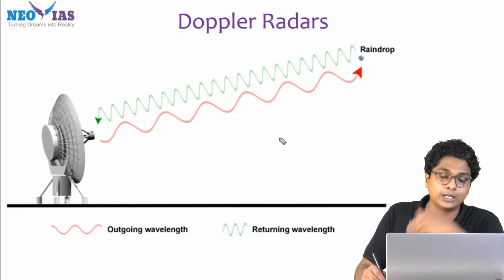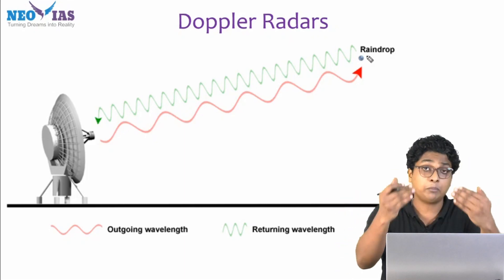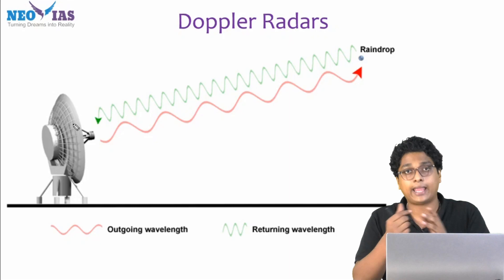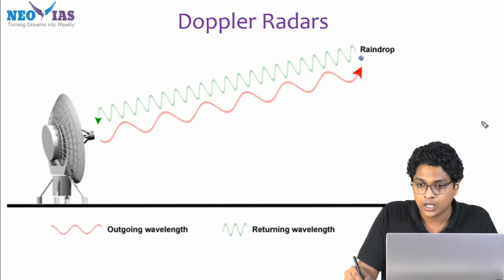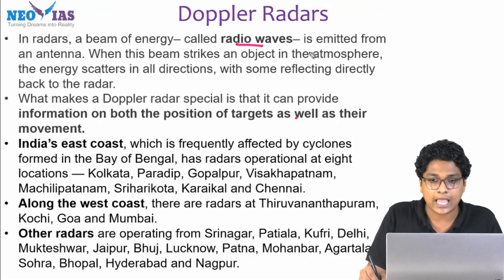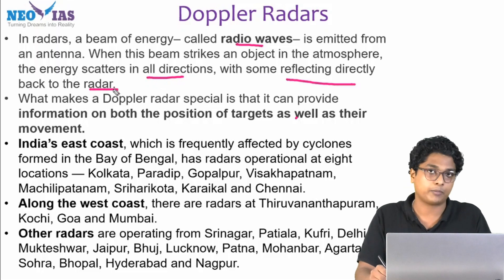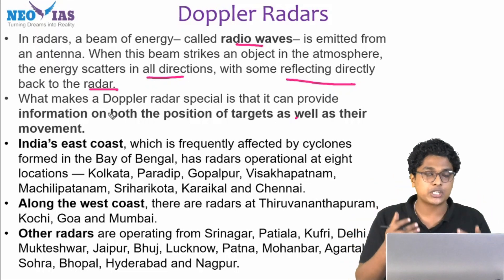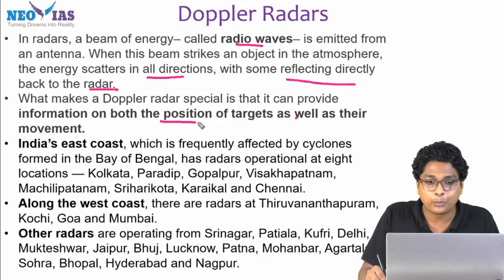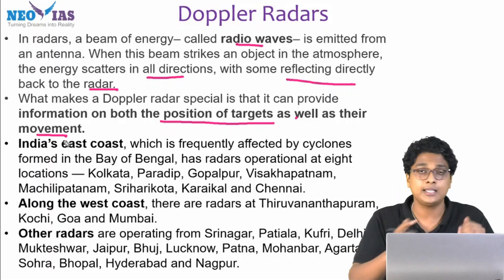With this, we can actually measure the intensity of the rainfall and whether it is approaching or leaving the weather station. In radars, a beam of energy called radio waves is emitted from an antenna. When it rakes an object in the atmosphere, the energy scatters in all directions, reflecting directly back to the radar. A larger object would send more intense radiation back to the radar. What makes a Doppler radar special is that it can provide information on both the position of the target as well as its movement — where this object is and whether it is moving or not.